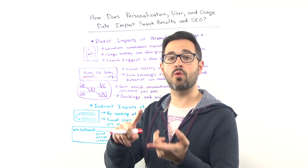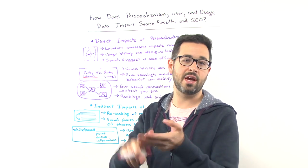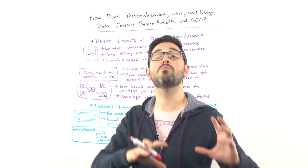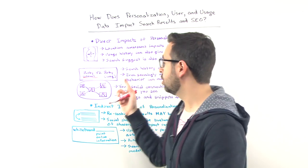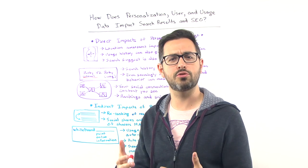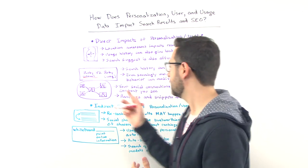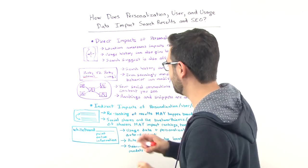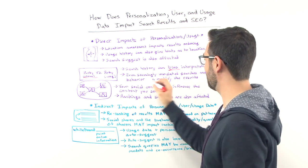Likewise, if I've just done searches for Python and Perl and Java, they might interpret that to mean, aha, this person is most likely when they're searching for Ruby, looking for the programming language. This makes it very hard if you're a software engineer who's trying to look for gemstones, by the way. Because as you know, the Ruby gem is not just a gem. It's also part of the programming protocol.